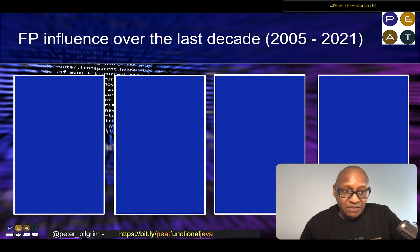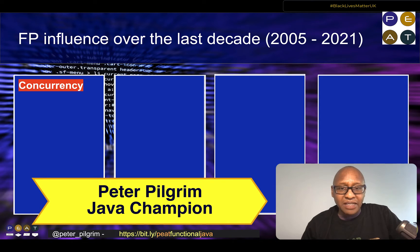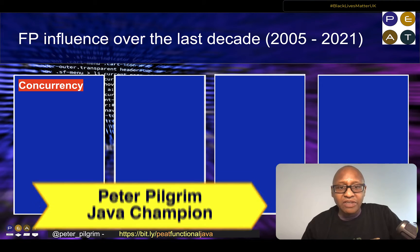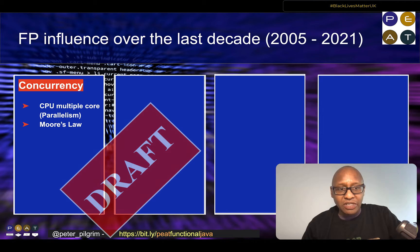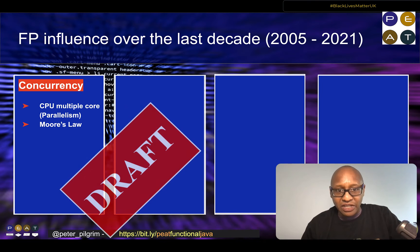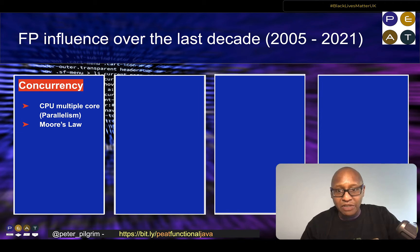Let's look at the influence of functional programming over the last decade and a half. Functional programming took off from academia when Intel introduced a dual-core Pentium around 2005-2006, because Moore's law meant we were reaching the physical quantum physics limits of miniaturization on silicon chips. Intel introduced the dual-core idea as a way of hyper-threading on a CPU, so in theory we could have two executing paths simultaneously on a consumer chip.